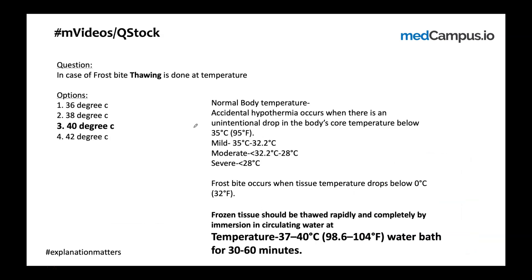Coming back to the original question: in case of frostbite, thawing is done at what temperature? It is done between 37 to 40 degrees centigrade. If the options given are 38 and 40, you can choose 40 as it is the best answer. If the patient cannot tolerate this, the temperature can be decreased, but not below 36°C.